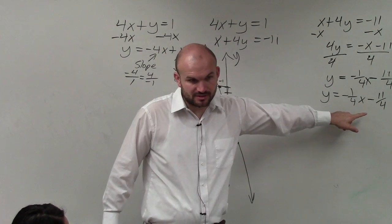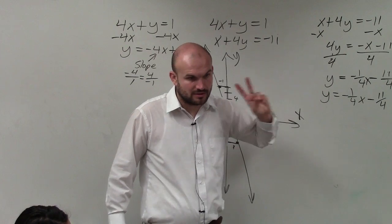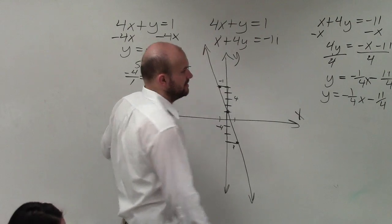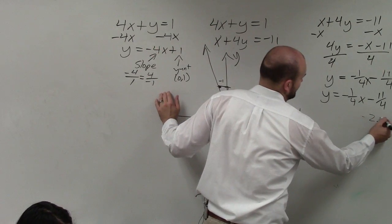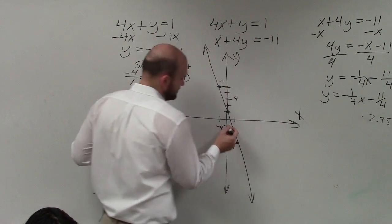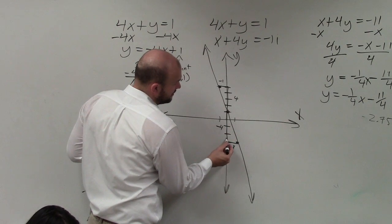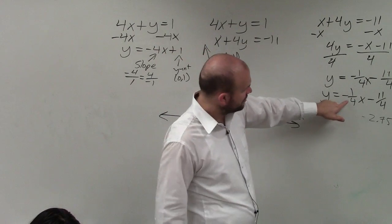Here, 4 goes into 11 two times with the remainder of 3. So it's 2 and 3/4ths, which would be negative 2.75. So I'll go down negative 1, 2, 0.75. And then I follow again the same thing with the slope.